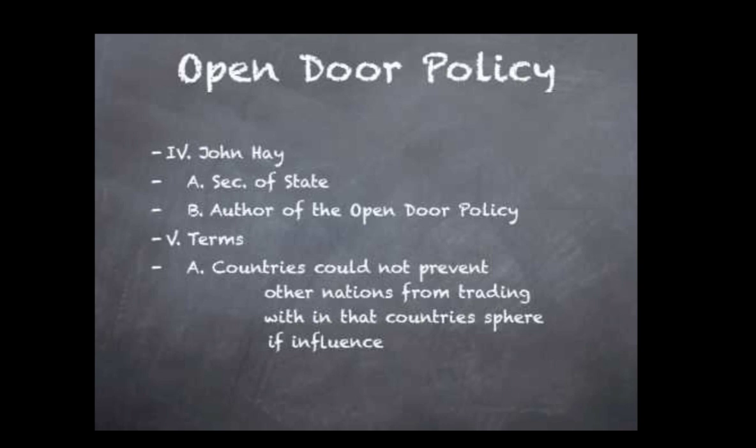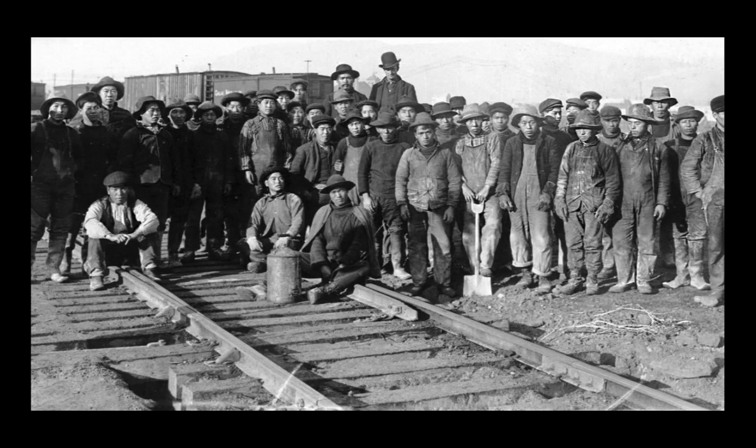Chinese population is so large that even a small percentage — say five or seven percent — urbanizing represents a lot of people. So with few jobs available in the cities, the Chinese population looked abroad and found jobs in California building railroads.